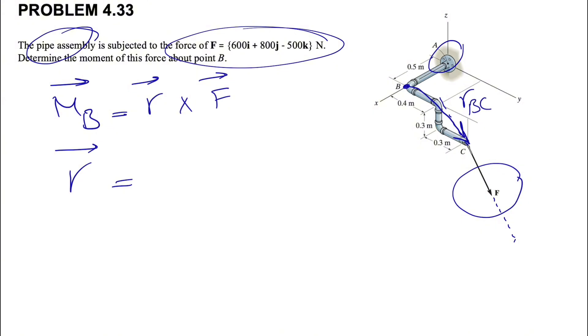So we have the position vector R_B_C, or we can show it like R_C/B. So what we are trying to find is R_B_C, and all we need to do is to find the coordinates of C and subtract that by B.